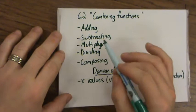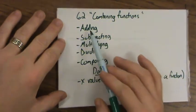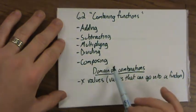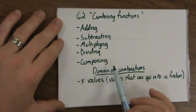You can combine them in a number of ways. You can add functions, subtract them, multiply them, and divide them. These are pretty straightforward. Then we can compose them. I'll go over what that means, of course.